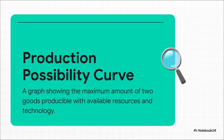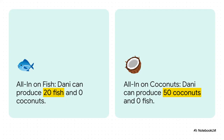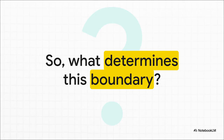To make this simple, let's imagine a guy named Danny, stranded on an island. Danny has a certain amount of time and energy. If he goes all in on fishing, he can catch 20 fish a day. If he only gathers coconuts, he can get 50. He can get some mix of the two, but what he can't do is get 20 fish and 50 coconuts — that's outside his boundary. That line represents his own personal economic limit.